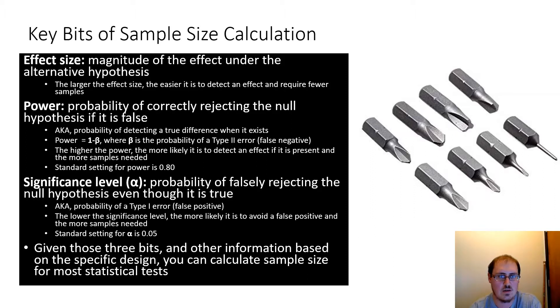Power is the probability of detecting a true difference. It's also essentially one minus the probability of a false negative. The higher the power, the more likely it's to detect a true effect that's there, but it requires more samples.